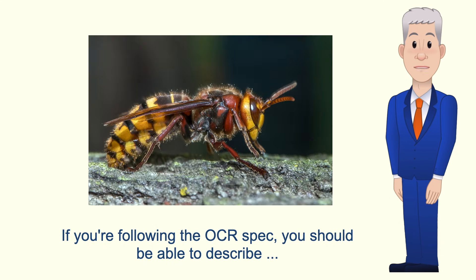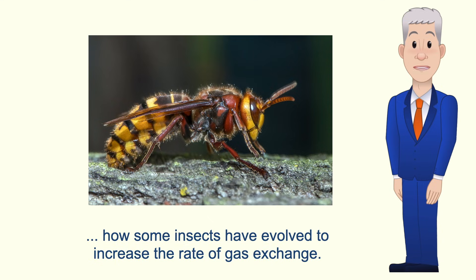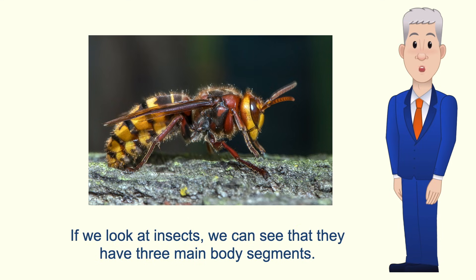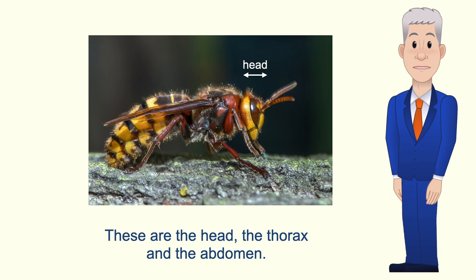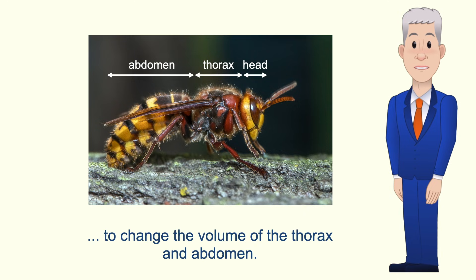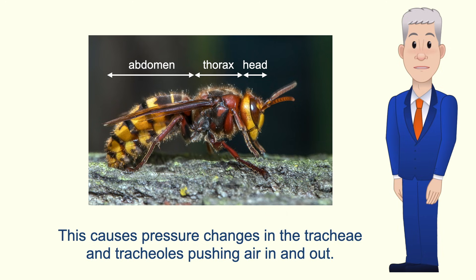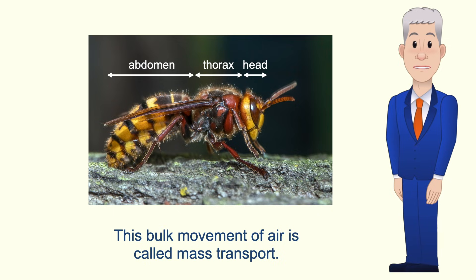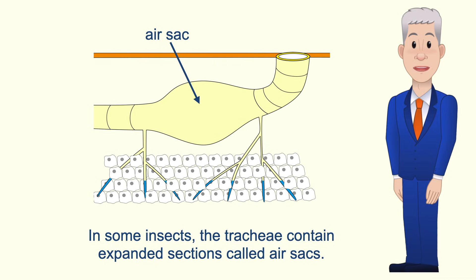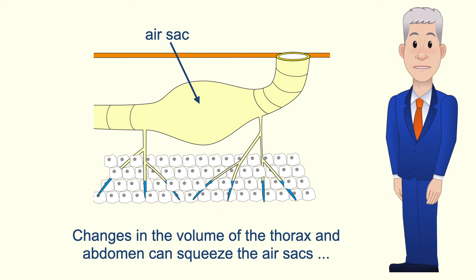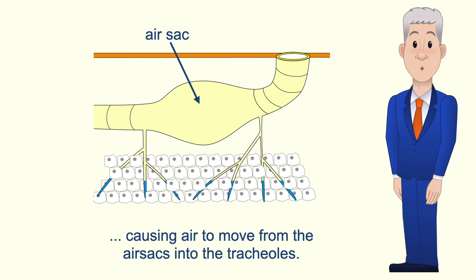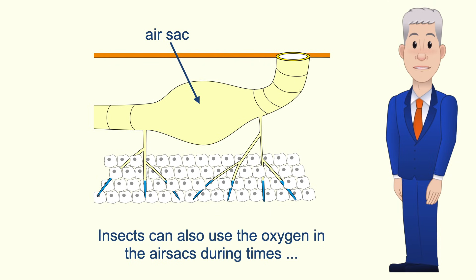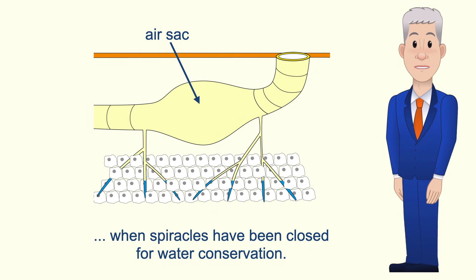If you're following the OCR spec, you should be able to describe how some insects have evolved to increase the rate of gas exchange. Insects have three main body segments: the head, the thorax, and the abdomen. Some insects can contract muscles to change the volume of the thorax and abdomen, causing pressure changes in the tracheae and tracheoles that push air in and out — this bulk movement of air is called mass transport. In some insects the tracheae contain expanded sections called air sacs. Changes in the volume of the thorax and abdomen can squeeze the air sacs, causing air to move from the air sacs into the tracheoles. Insects can also use the oxygen stored in the air sacs during times when spiracles have been closed for water conservation.